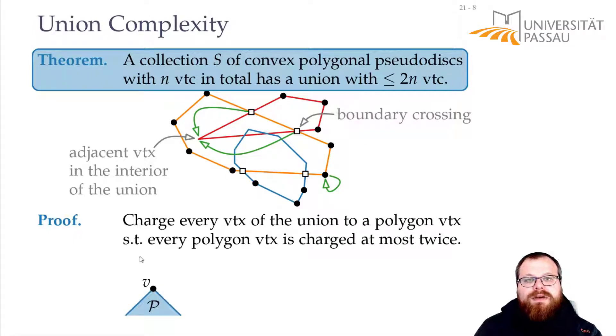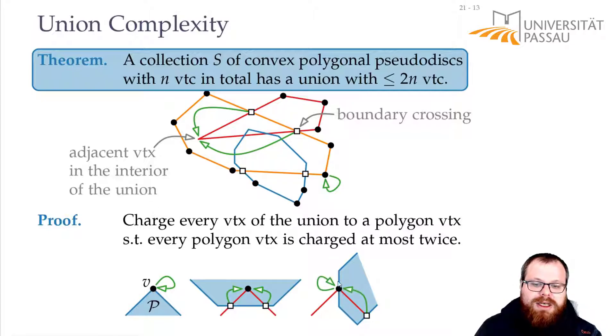So in detail, if we have a corner, then we charge it to itself. If we have a corner that is somewhere here on the boundary that intersects the boundary of another polygon, then we can again charge it to itself. And the other intersection we charge to the point.